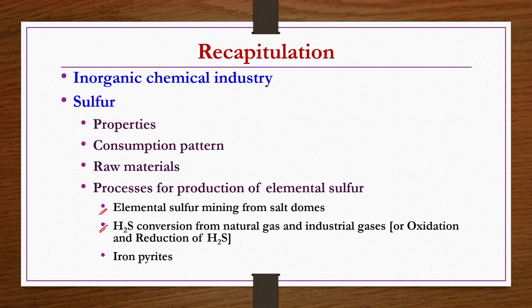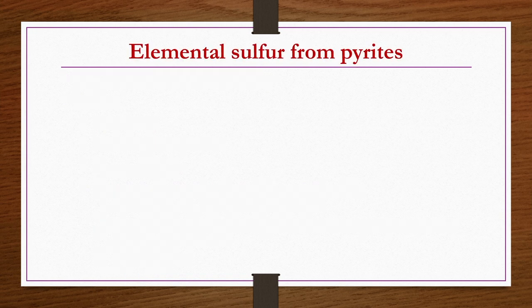The first two methods were discussed in the previous lecture. In today's lecture, we are going to discuss how to produce elemental sulphur from iron pyrites. Iron pyrites are nothing but ore where predominantly iron disulphide (FeS2) is present.